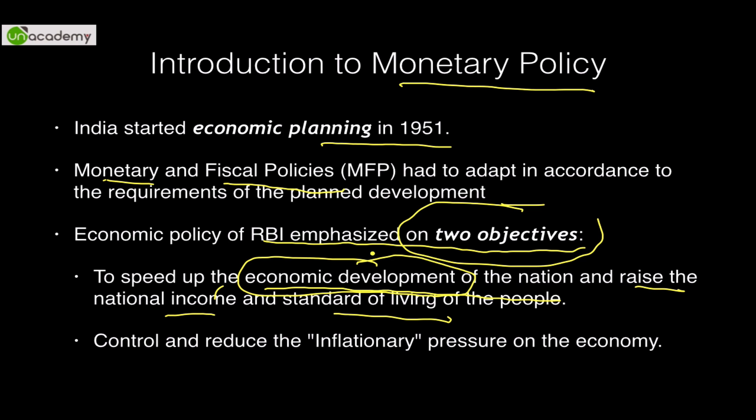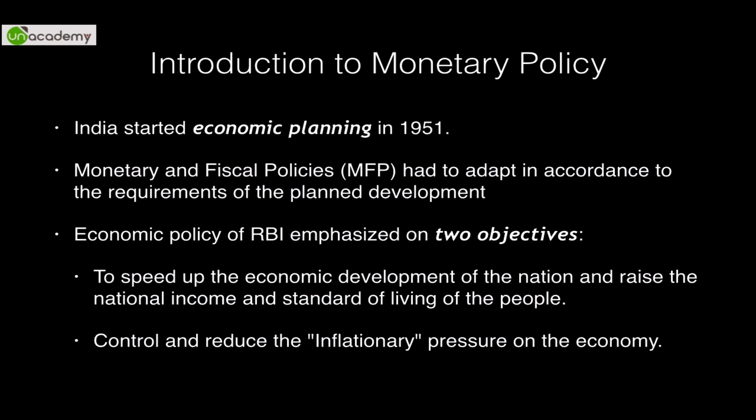The second objective is to control and reduce the inflationary pressure on the economy. Inflation, as you know, is the general rise in prices of goods and services. In order to reduce inflation, RBI takes certain measures through its policy rates, which also reduces the inflationary pressure on the economy. So the two-fold objective: first is economic development and second is reducing inflationary pressure.